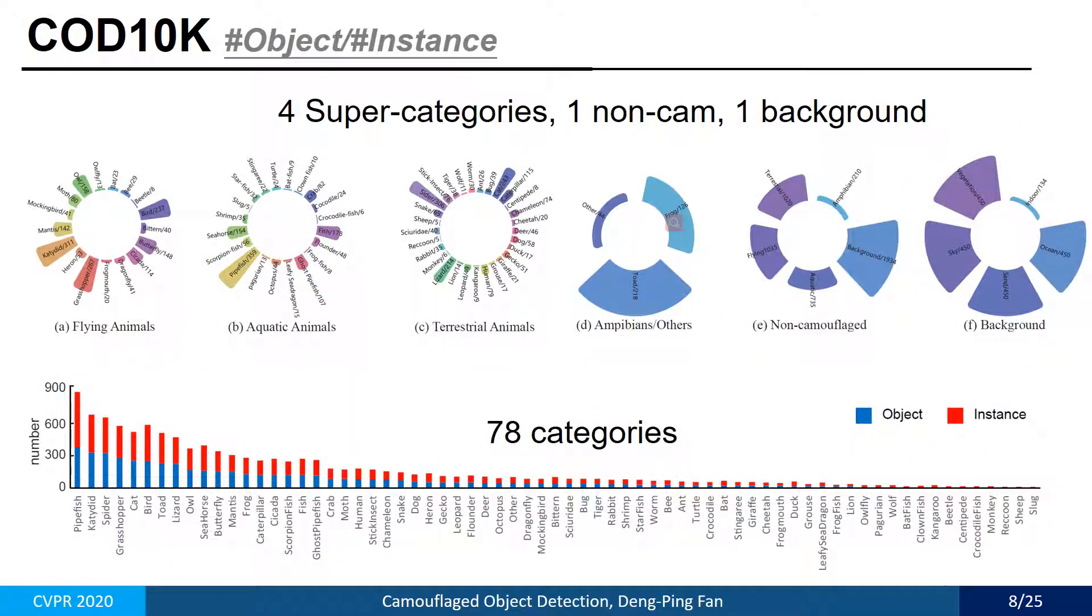These images are divided into 78 camouflaged object categories, such as aquatic, flying, amphibians, and terrestrial.